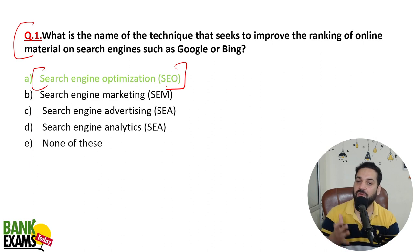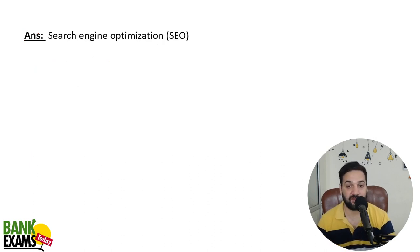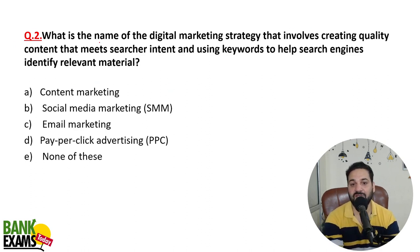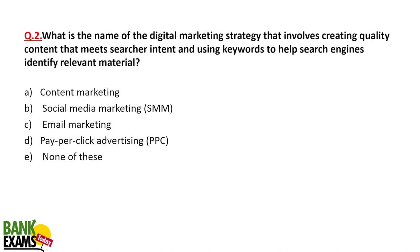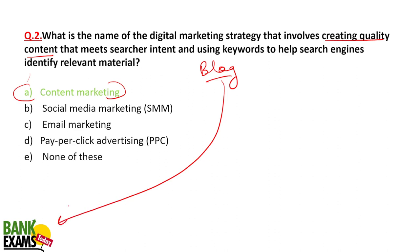What is the name of the digital marketing strategy that involves creating quality content that meets the searcher's intent and using keywords to help search engines identify relevant material? So you are creating quality content that meets searcher's intent — that is content marketing. For example, when you go to the blog of bank exams today and search for any banking topic, you will land on bankexamstoday.com. That is content marketing.